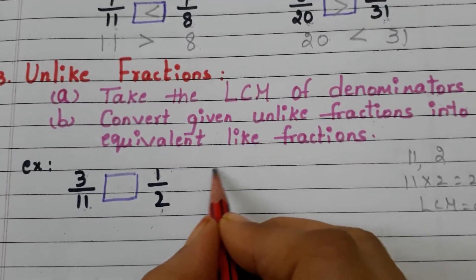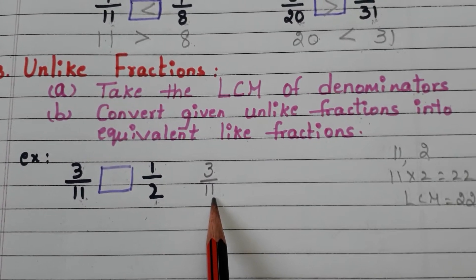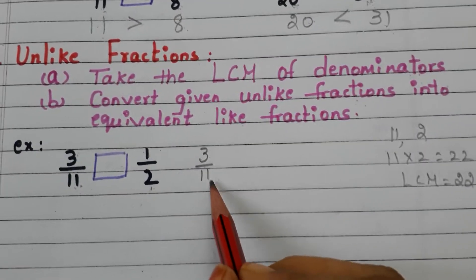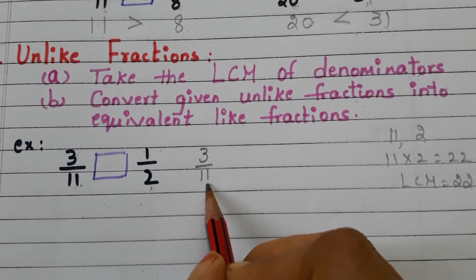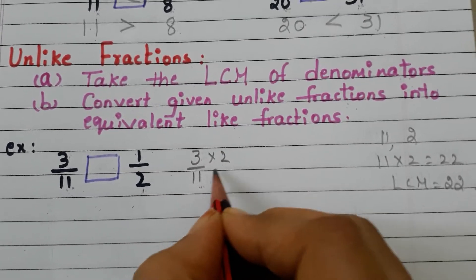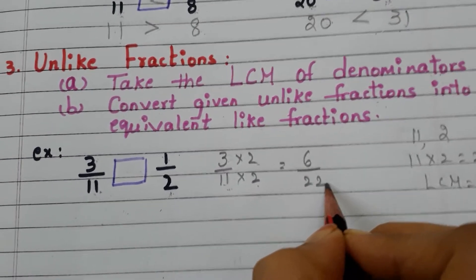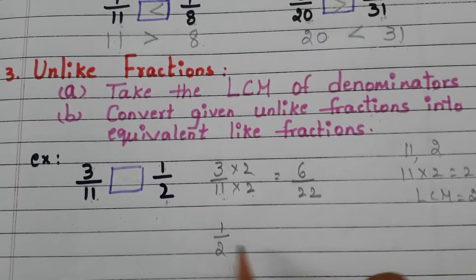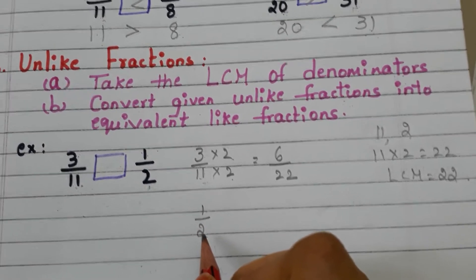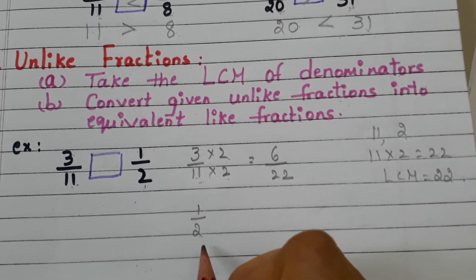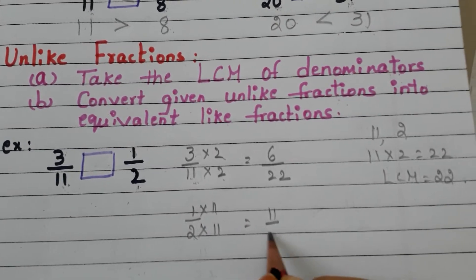Now take the fraction 3 by 11. We multiply the numerator and denominator by the same number to get 22 as the denominator. With what number do we multiply 11 to get 22? We multiply by 2: 3 times 2 is 6 and 11 times 2 is 22, giving 6 by 22. Now take 1 by 2 — multiply numerator and denominator by 11 to get denominator 22: 2 times 11 is 22 and 1 times 11 is 11, giving 11 by 22.